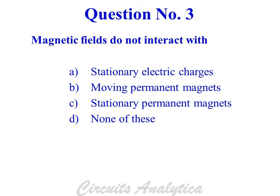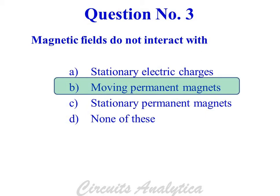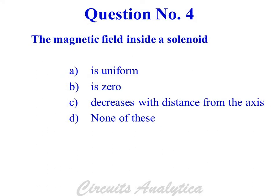Magnetic fields do not interact with moving permanent magnets. The magnetic field inside a solenoid is uniform.